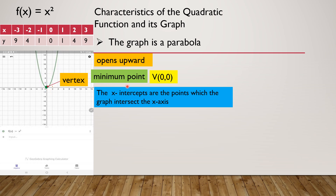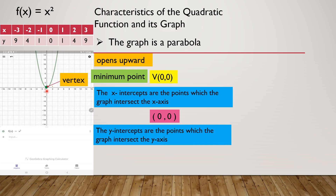The x-intercepts are the points at which the graph intersects the x-axis. At what point does the graph intersect the x-axis? This is the x-axis and this is the y-axis. It intersects at (0, 0). The y-intercepts are the points at which the graph intersects the y-axis. The graph also intersects at (0, 0), or y = 0. For the x-intercept, x = 0.